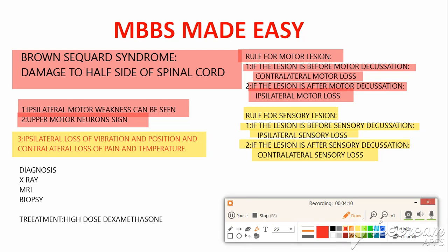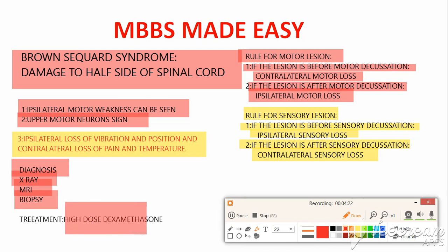Diagnosis can be made on the basis of X-ray, which is the first initial investigation. MRI is the best investigation, and biopsy is used to rule out tumor. Treatment is high-dose dexamethasone. As dexamethasone is anti-inflammatory, it will decrease inflammation. That's all about Brown-Séquard syndrome. Thank you so much.